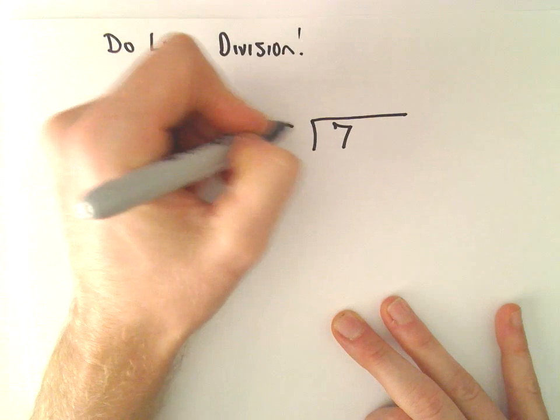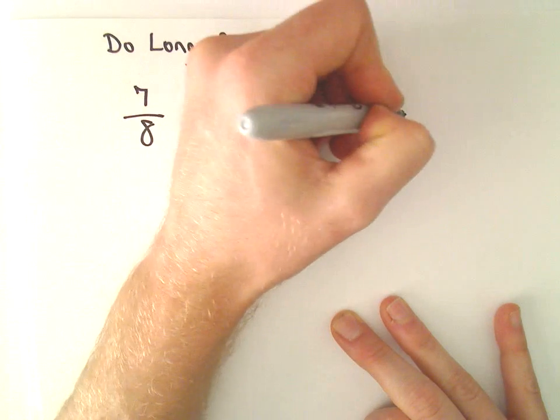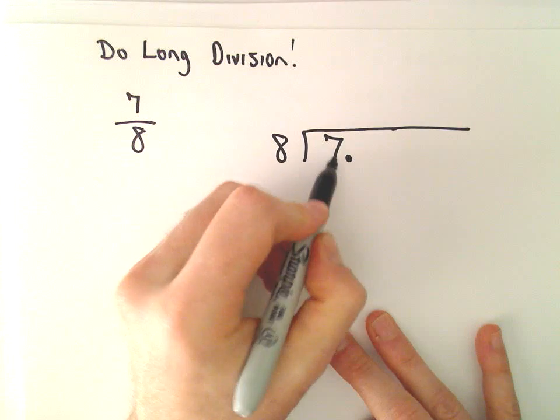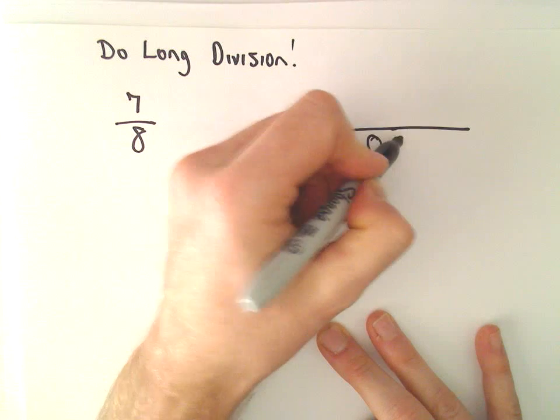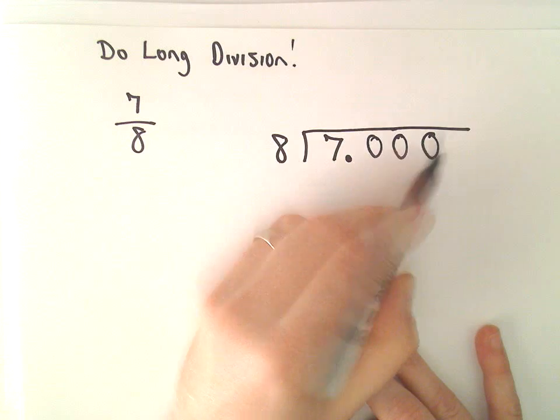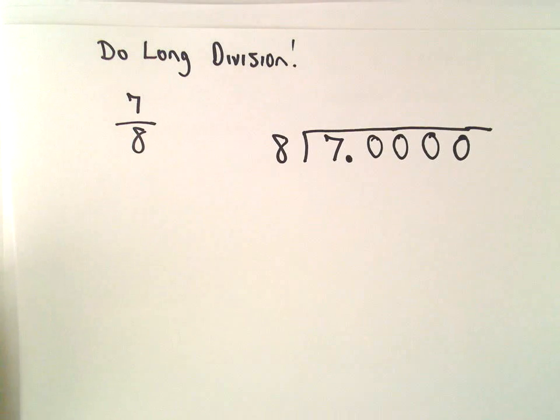Well, seven divided by eight. I'm going to go ahead and write seven, and I'm going to add in some decimal places, so I'm going to write this as 7.0000 - tens, hundreds, thousandths, maybe one more place in case we have to round.